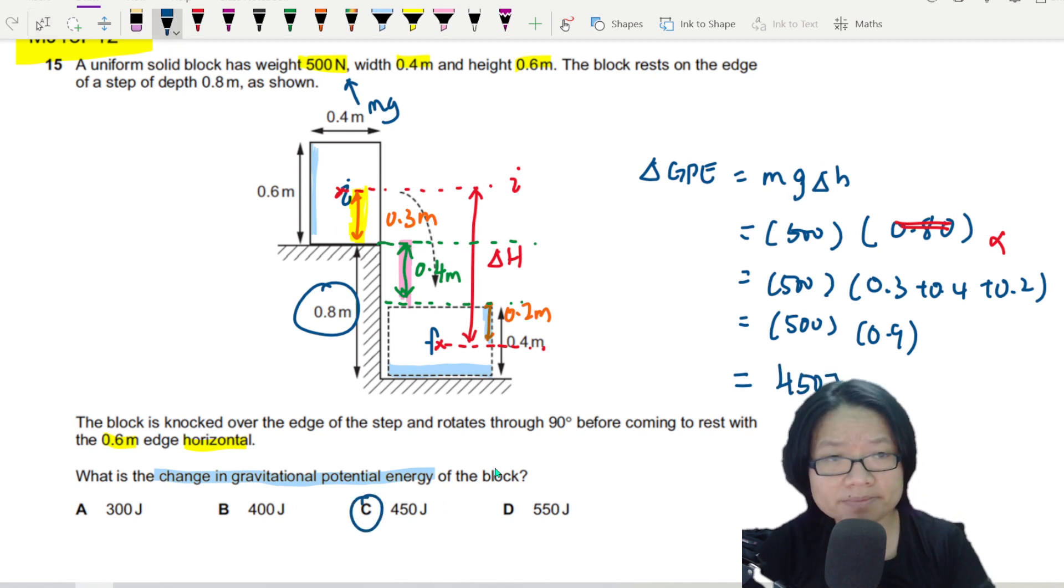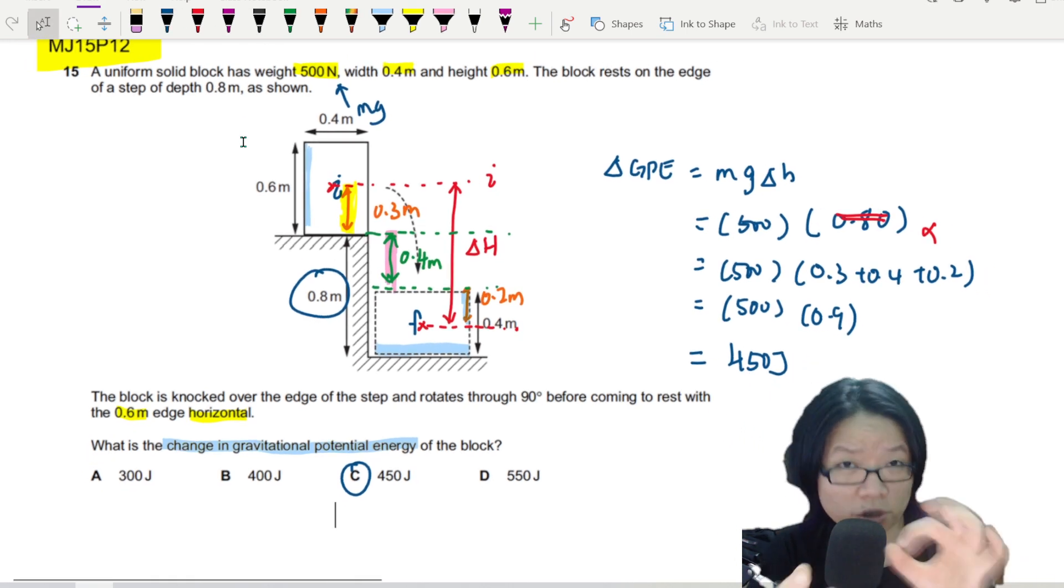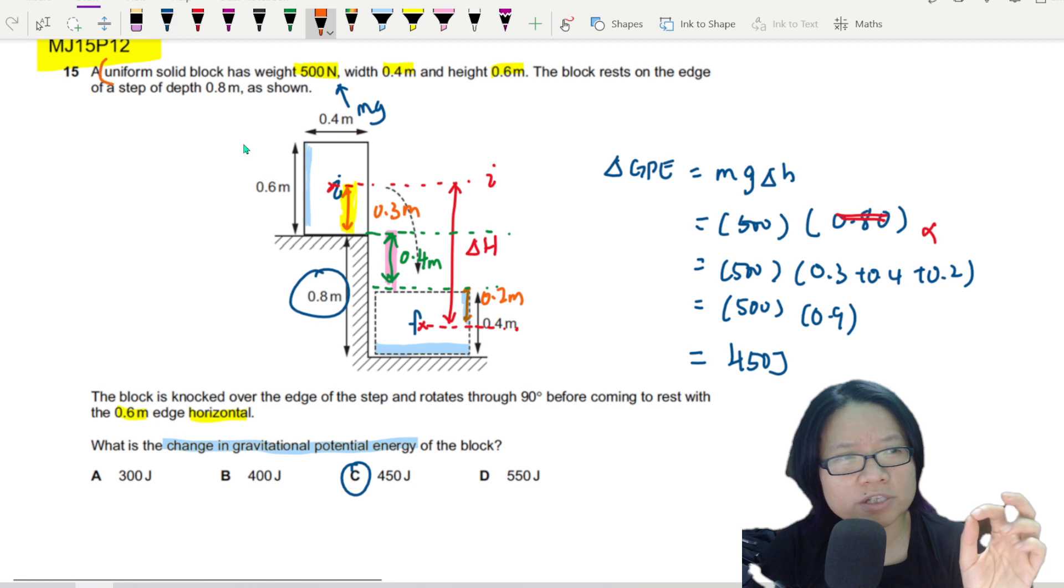That's it. So please, whenever there is a solid object, not a point mass, and you want to consider the change in GPE, take the center of mass.